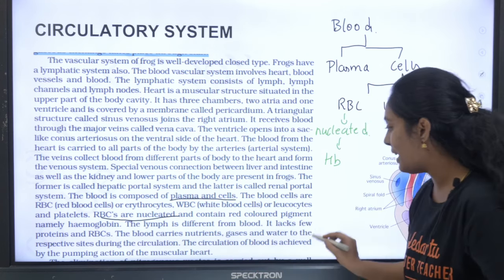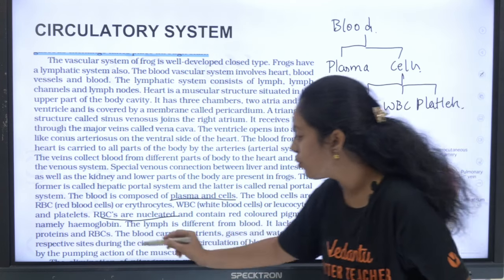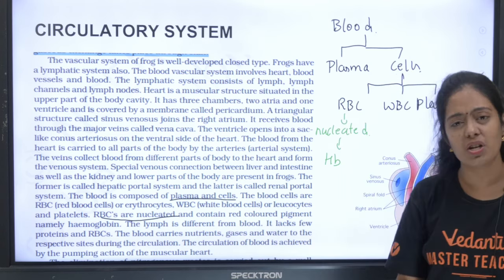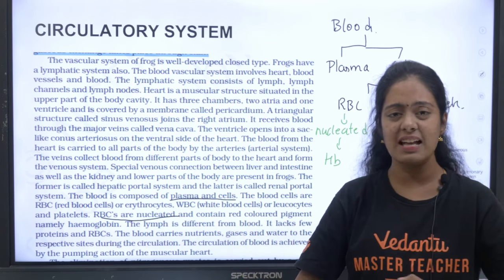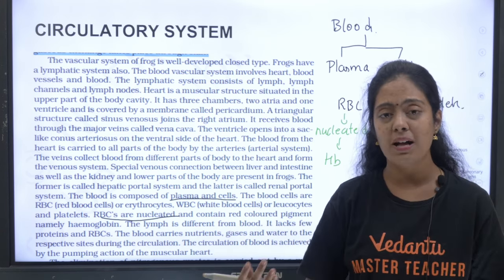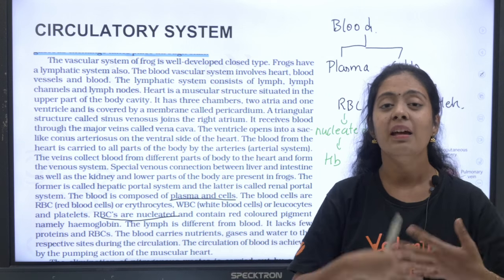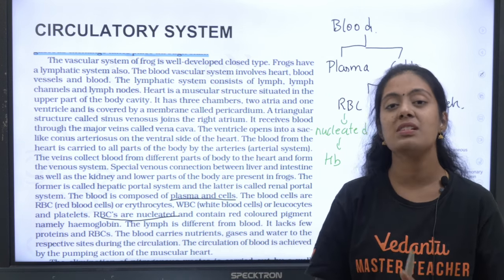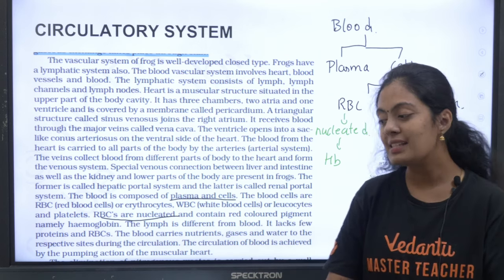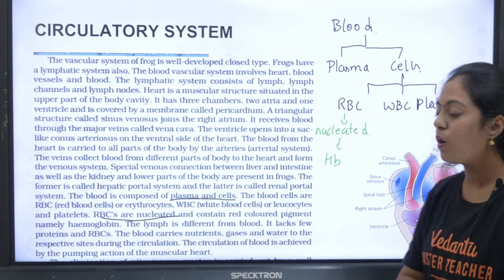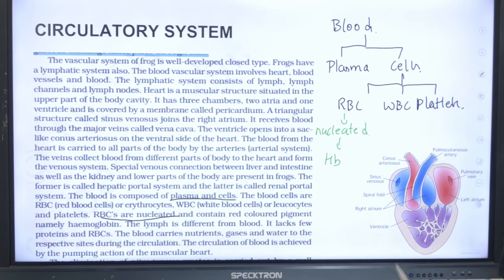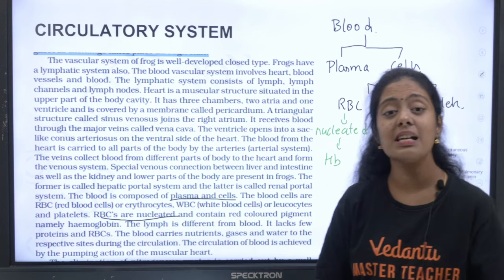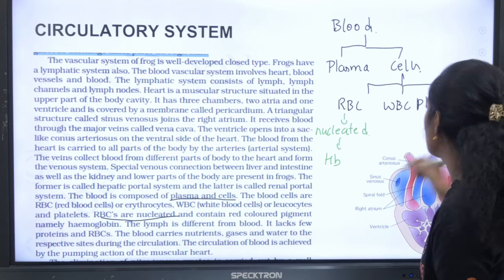The lymph is different from blood — it lacks some proteins and RBCs. Blood carries nutrients and gases to all body parts and carries back carbon dioxide and other metabolic and nitrogenous wastes. This type of circulation is called incomplete double circulation.